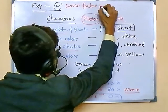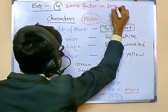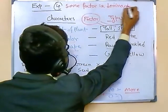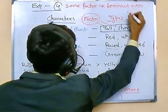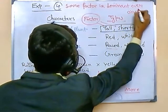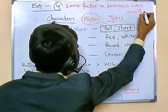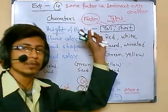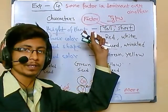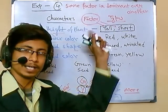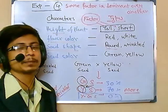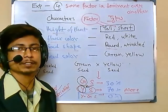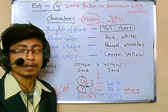Some versions of the factors are dominant over another version — and that is Inference Number 4. All of these inferences come from the great experiments of Gregor Mendel.